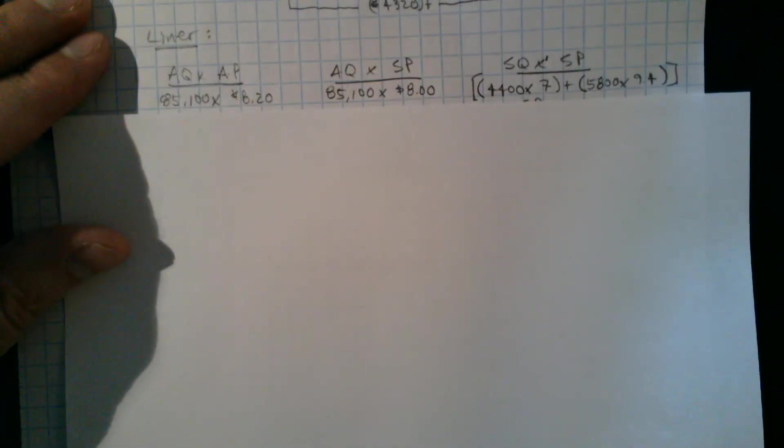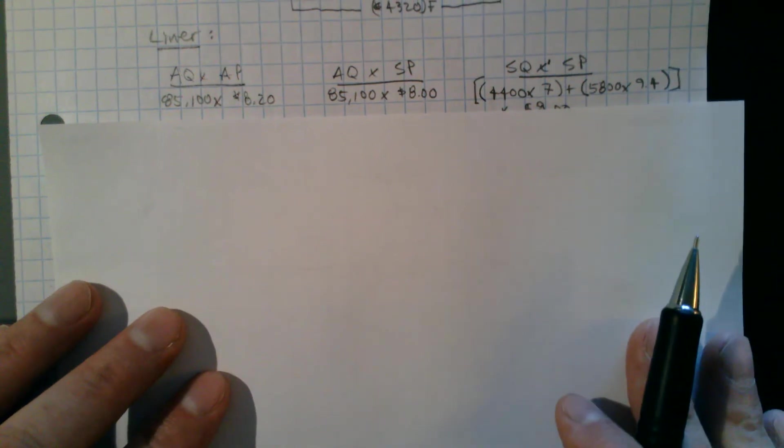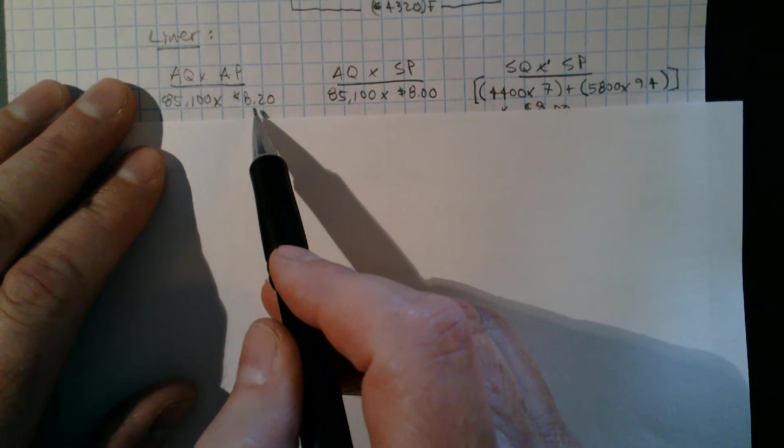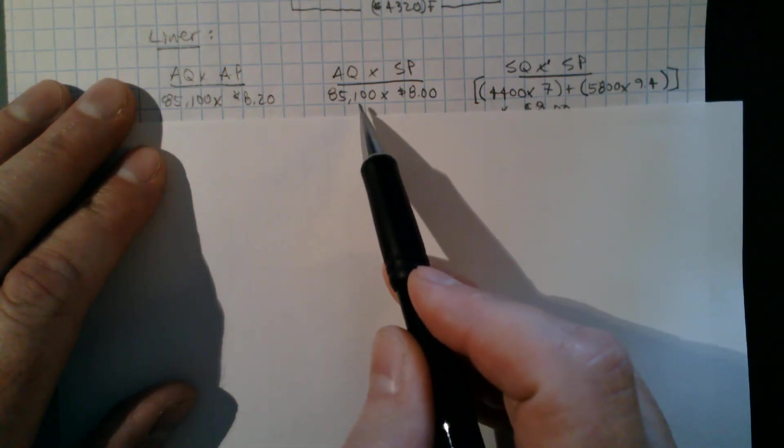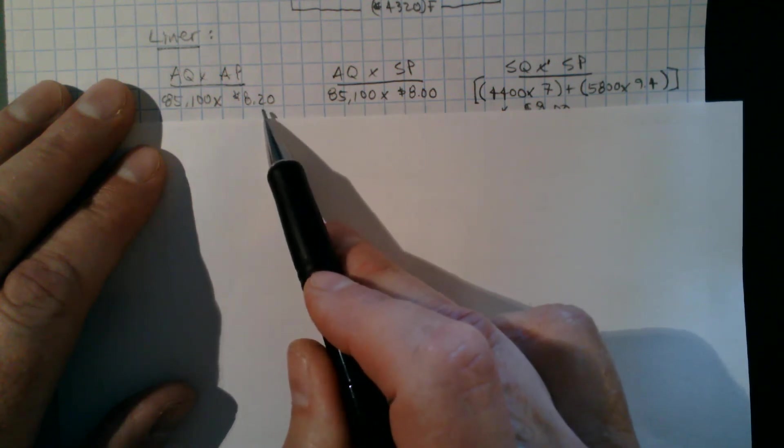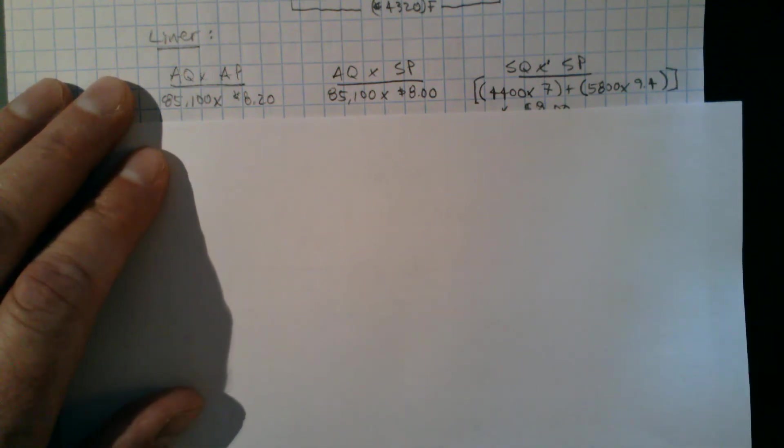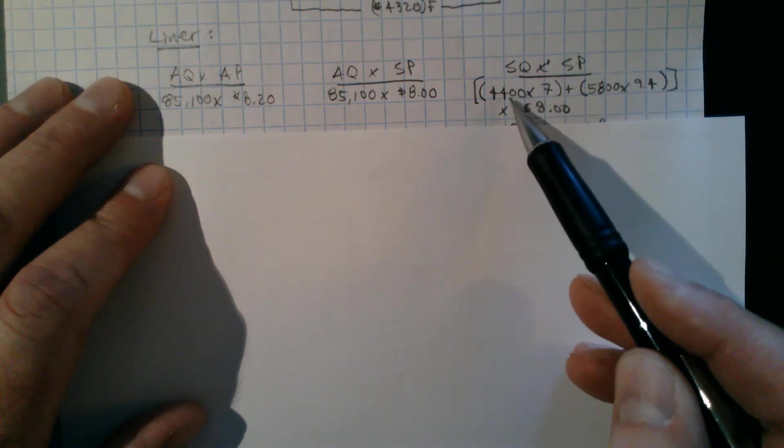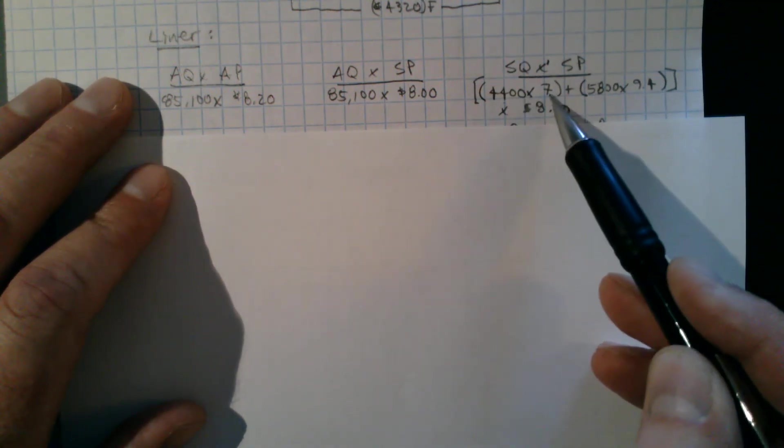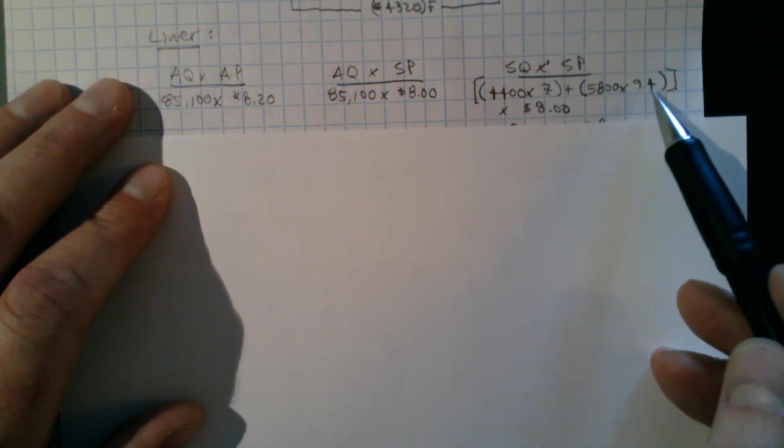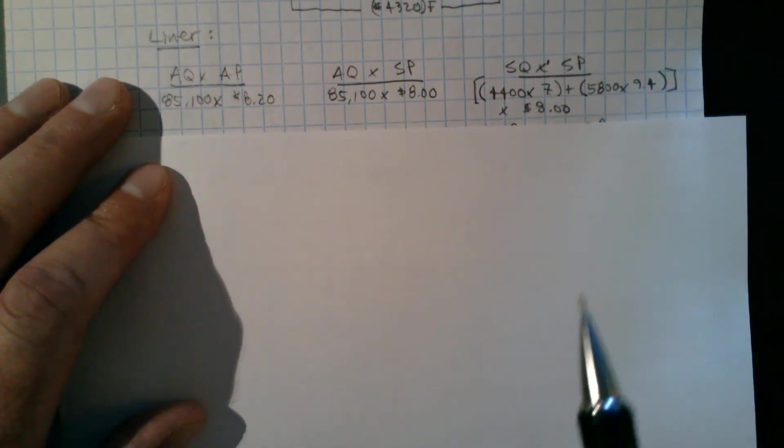So I'm going to do the same thing for the liner so you can see it one more time. So the actual quantity times the actual price paid for the liner material, I actually used 85,100 pounds, and I paid $8.20 a pound. So I've got the 85,100 times my standard price, which was $8. Right now, I know I'm going to have an unfavorable variance because I paid more than my standard. And then again, how much liner material should I have used for that amount of production? So for the 4,400 women's coats we actually made, I should have used 7 pounds of liner, 7 square yards. And for the 5,800 men's coats, I should have used 9.4, all times the standard price of $8.